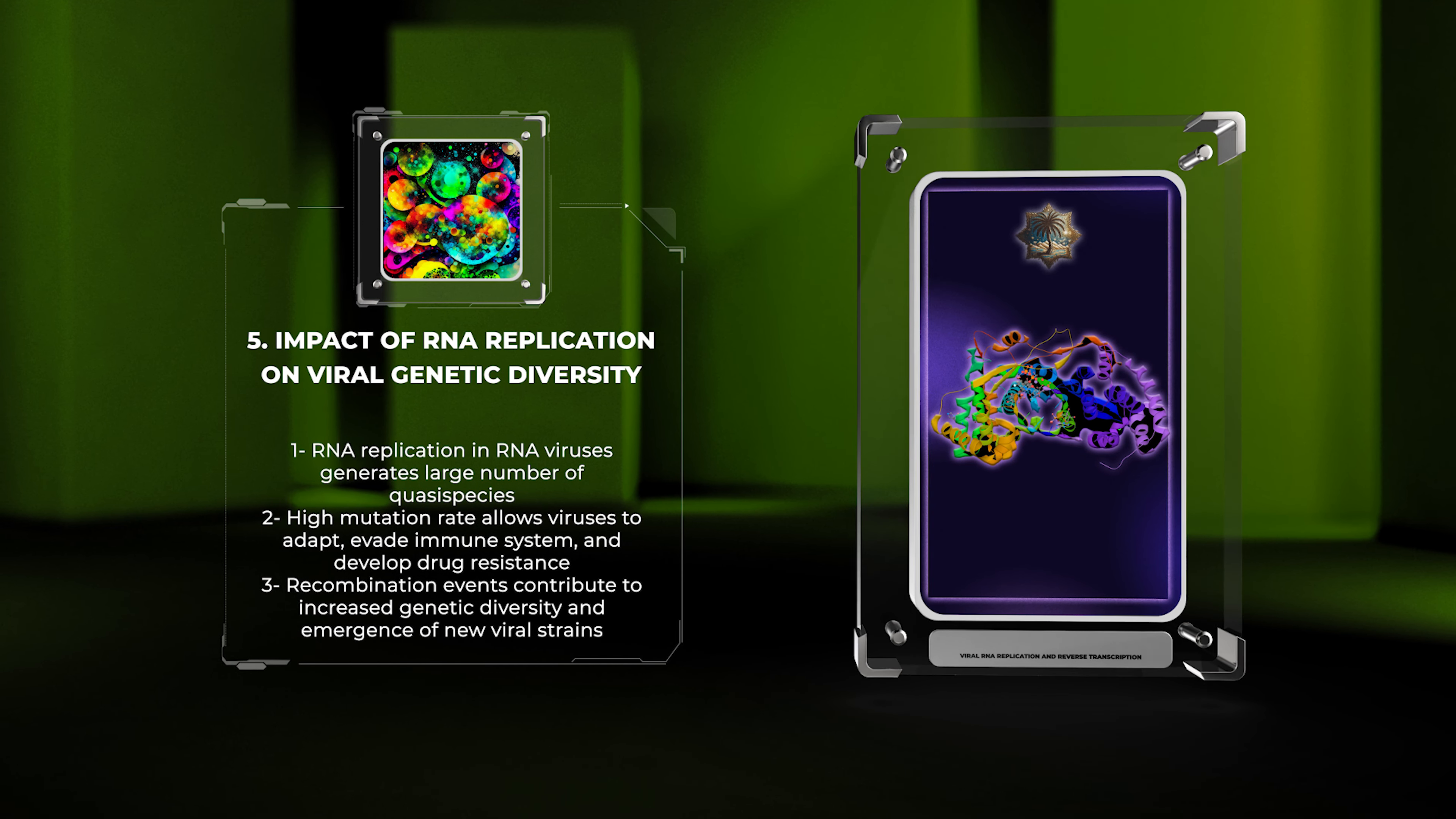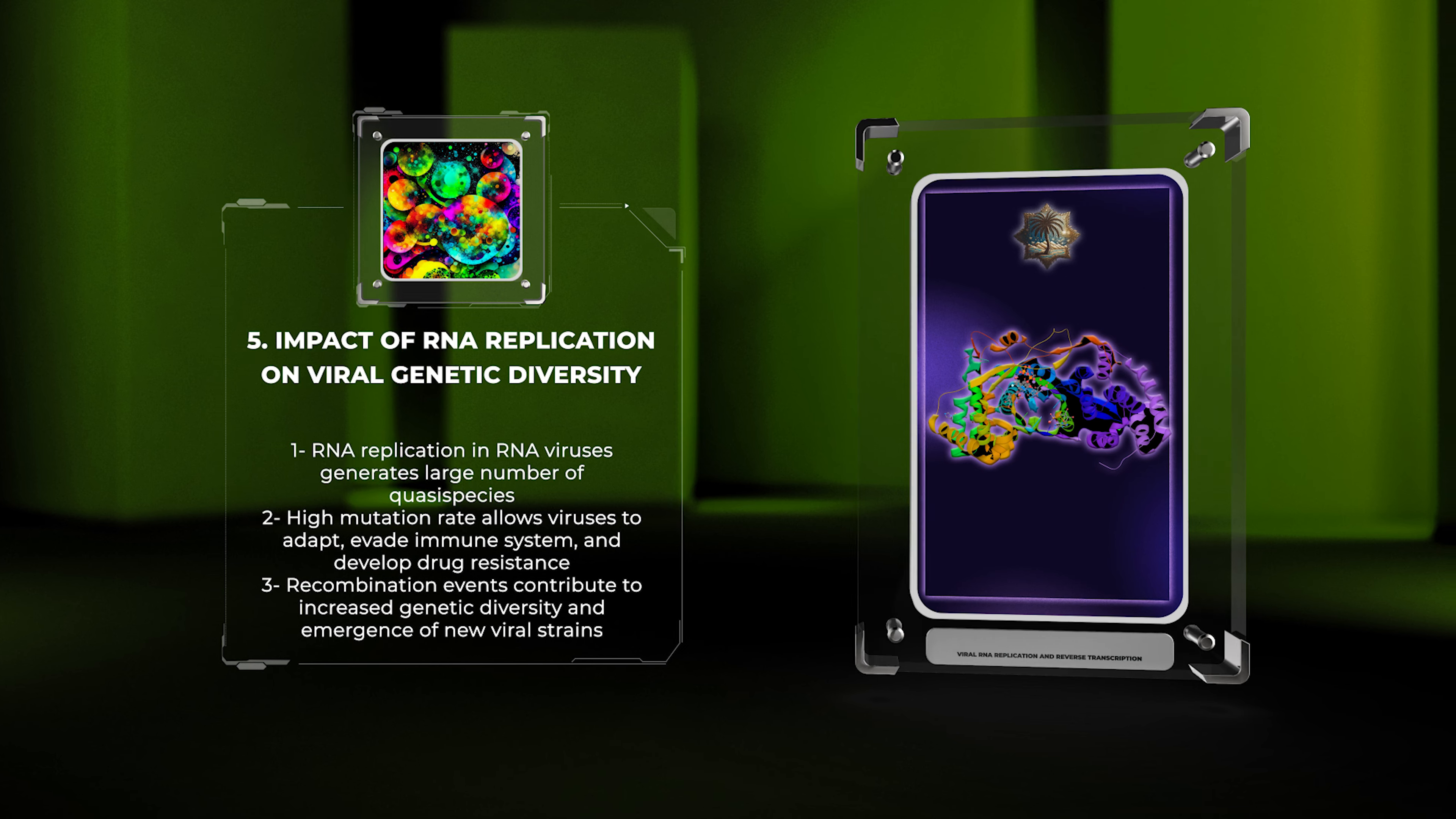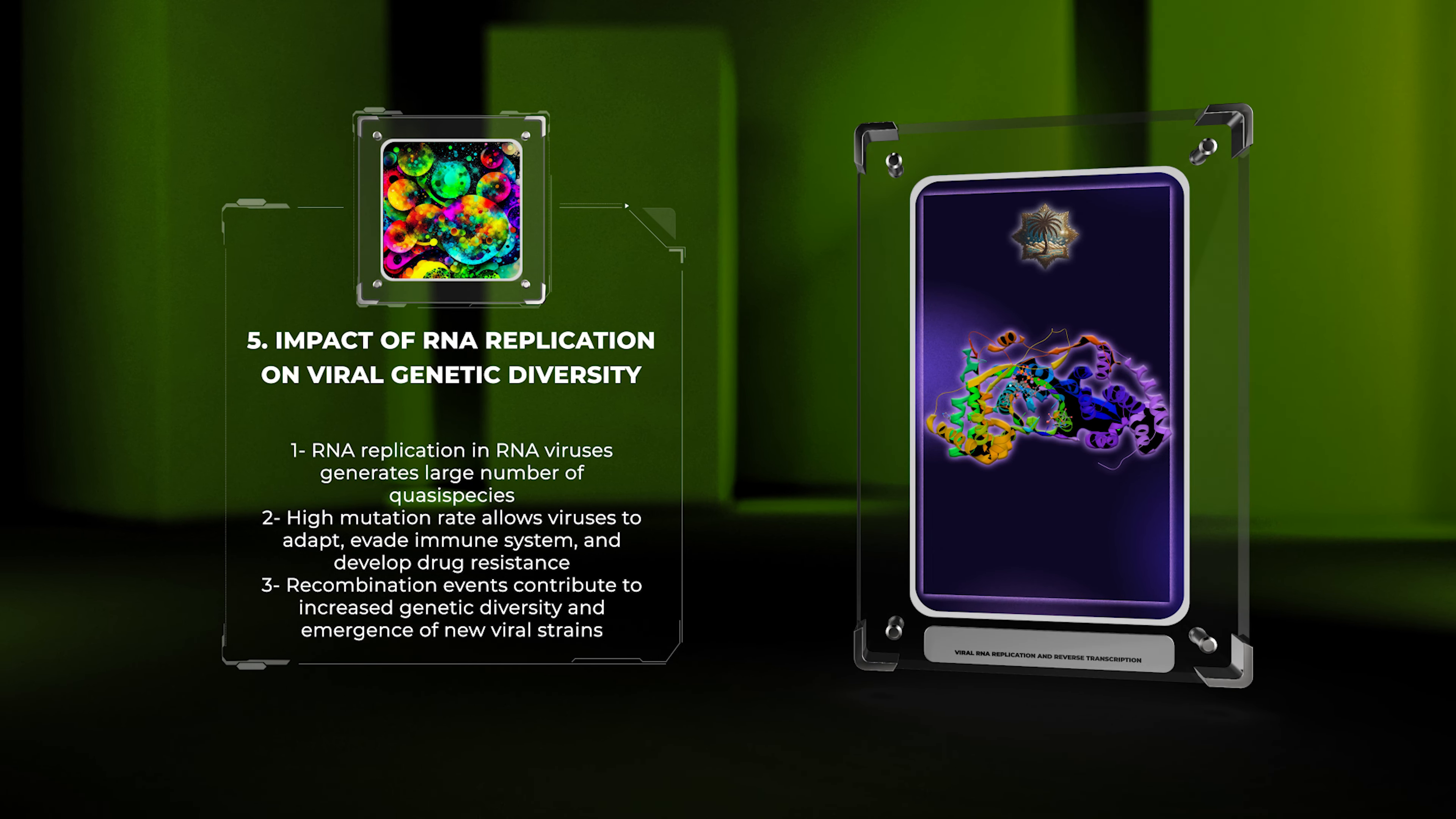RNA viruses evade the immune system and develop drug resistance. Recombination events during RNA replication can also contribute to increased genetic diversity and the emergence of new viral strains. Understanding this impact is crucial for understanding viral diseases and developing effective treatments.